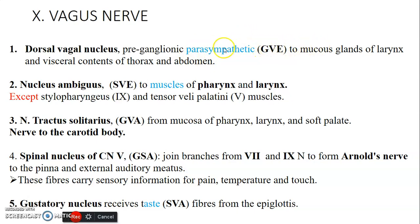That's general visceral efferent. Then we have nucleus ambiguus that carries special visceral efferent — to the muscles of the pharynx and the larynx, that's supplied by the glossopharyngeal nerve, and the palatini that's supplied by branches from the trigeminal nerve, that's the mandibular division.